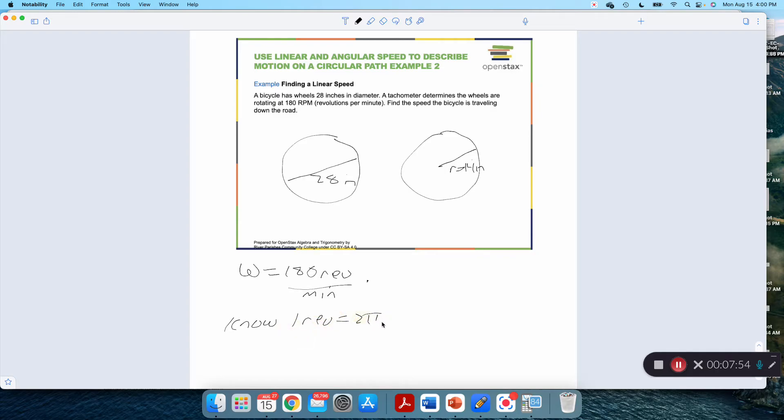I know one revolution is equal to two pi radians. So I want to multiply this thing by a fraction that's equal to one. I want to multiply this either by one revolution over two pi radians or two pi radians per one revolution. I want to convert this thing, I want to end up in radians per minute. So whatever I multiply by, I want radians on top so that I end up with radians, and I want revolutions on the bottom so that I can cancel the revolutions. That's this fraction.